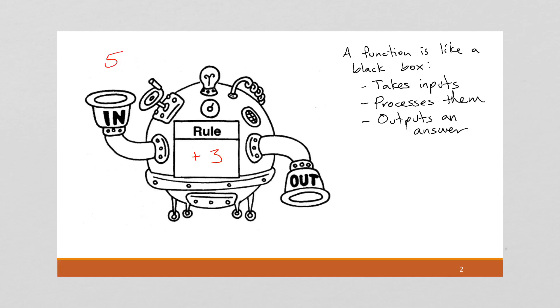And if we put a number five into the function, that's our input, the rule processes it. So we take the input plus three, so that gives us eight, and out comes the answer, eight.